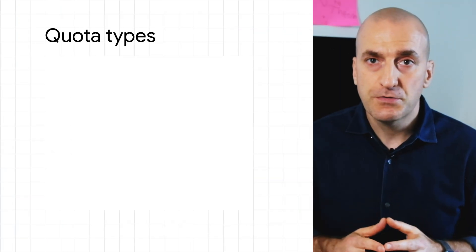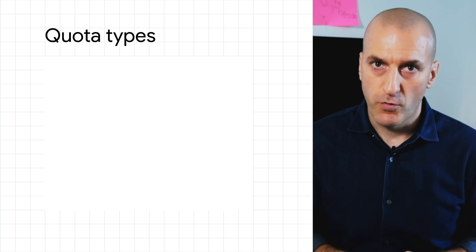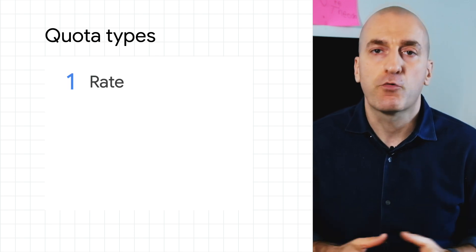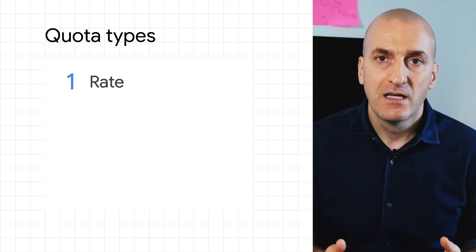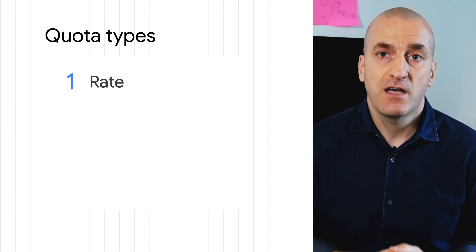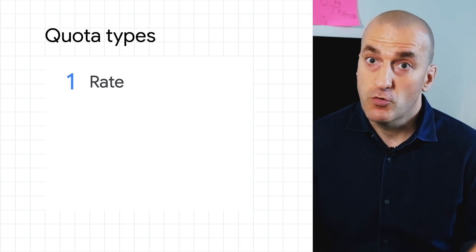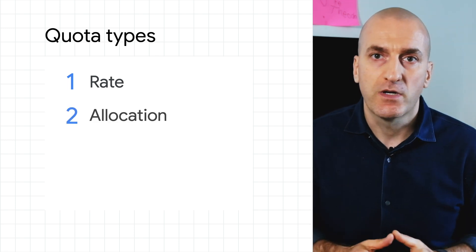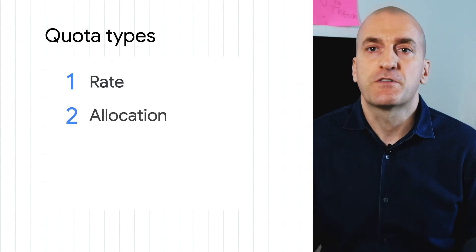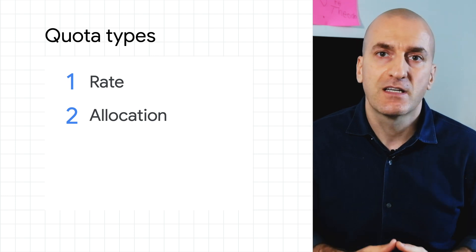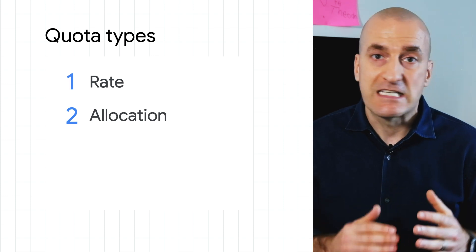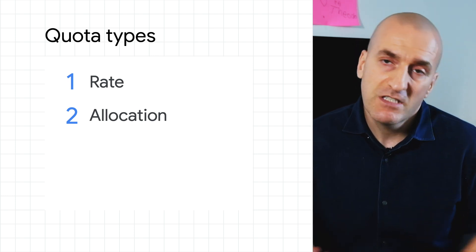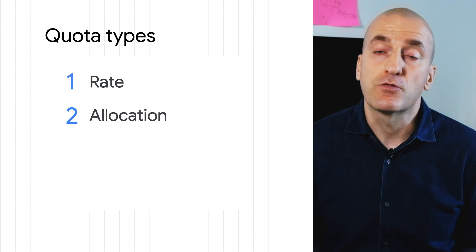There are two types of resource usage that we limit with quota. The first is rate quota, such as API requests per day — this quota resets after a specified time, such as a minute or a day. The second is allocation quota, such as the number of service accounts created in your project. This quota does not reset over time, but must be explicitly released, typically by deleting the resource.